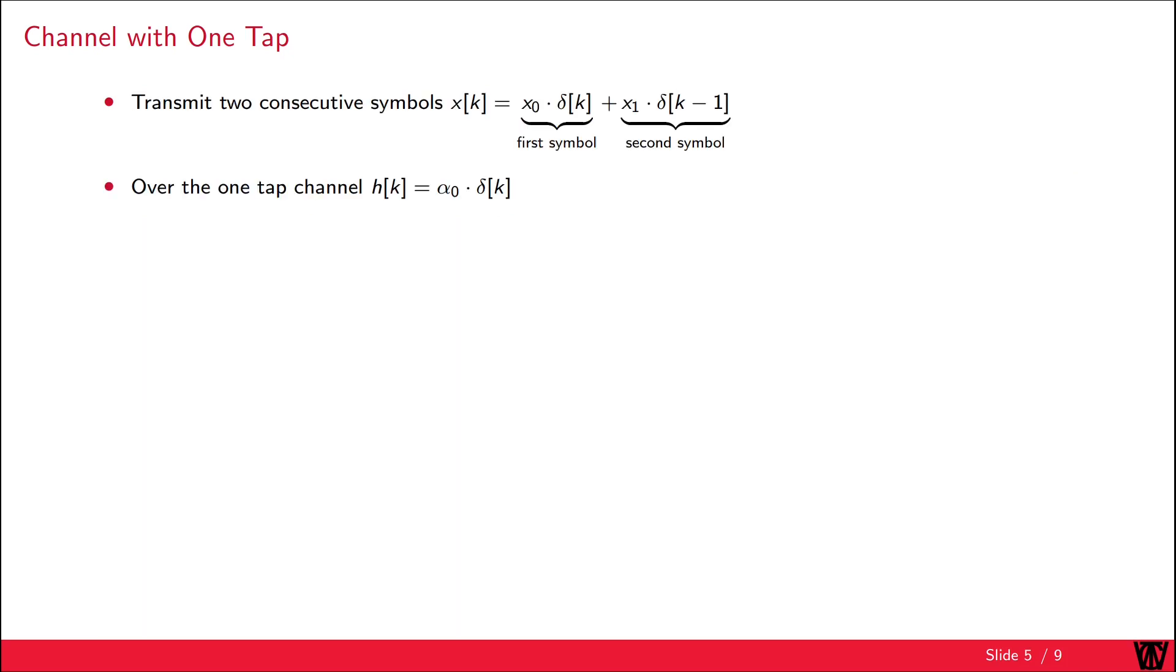We want to transmit two consecutive symbols X0 and X1 over our channel H. The received symbol in time domain is given by H convolved with the transmit symbol X plus the noise. The convolution is represented by the infinite sum starting at J equals minus infinity up to J equals infinity. We can now insert our channel into this sum. Note that the delta from K minus J times X from J can be simplified to X from K because the only contributing element is K equals J.